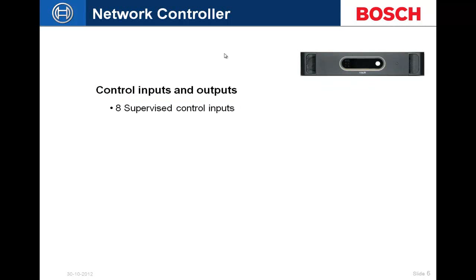Every piece of gear, with a few exceptions, has eight supervised control inputs. Supervision means we can detect an open circuit, a closed circuit, a short, and a break in the line. We do this by inserting two 10K resistors — one in-line with the switch and one across the switch — giving us 10K and 20K as our open and shorted states within the contact closure. An open state is a fault and a shorted state is also a fault.